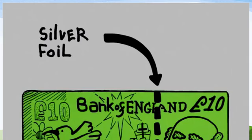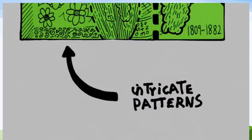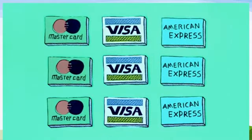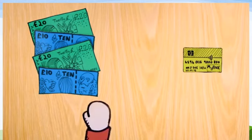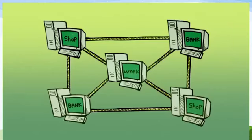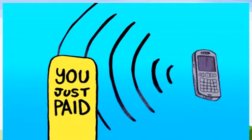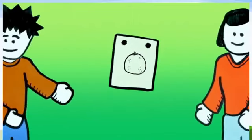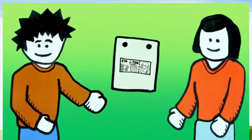Over time, more and more security features have been added to notes to stop them being copied, as well as getting smaller so they now fit into our pockets. Money has continued to change, and in the 1950s, credit cards were invented. Cards mean that now we don't need to carry notes and coins around to pay for stuff. In recent years, with better computers and internet technology, we don't even need to be there to pay for a product. Most of the money in the world is now, in fact, invisible. Money has come a long way over the years and it continues to change. Who knows what the future will hold?